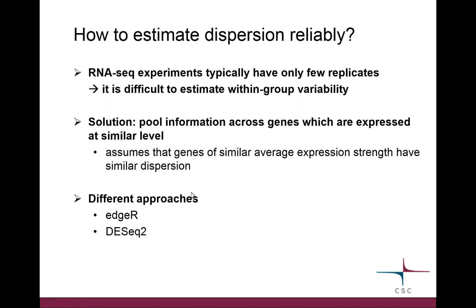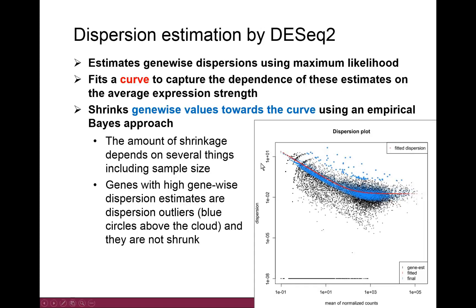To calculate dispersion reliably we would need many replicates, but sequencing is expensive so we usually only have around three. A clever idea is to borrow information: when estimating within-group variability for one gene with only three replicates, we look at other genes expressed at a similar level, pool that information, and assume that genes expressed at similar levels probably have similar dispersion.